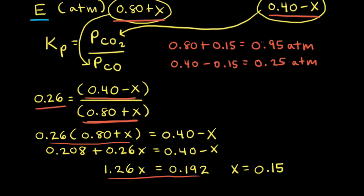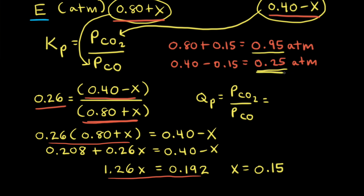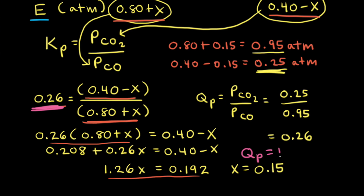Finally, we can use the reaction quotient Qp to verify that these equilibrium partial pressures are correct. We write Qp equal to the partial pressure of CO₂ divided by the partial pressure of CO, and plug in the equilibrium partial pressures: 0.25 atmospheres for carbon dioxide and 0.95 atmospheres for carbon monoxide. 0.25 divided by 0.95 is equal to 0.26. Since Kp is also equal to 0.26, Qp equals Kp, the reaction is at equilibrium, and we know we have the correct equilibrium partial pressures.